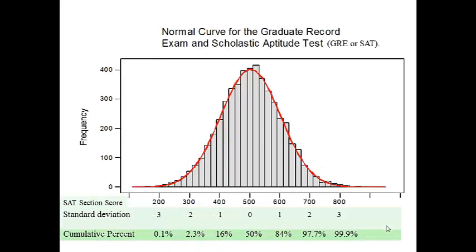The GRE, the SAT, and the ACT are also norm reference tests, and you can determine whether you are special needs, normal, or gifted using those norm reference scores.